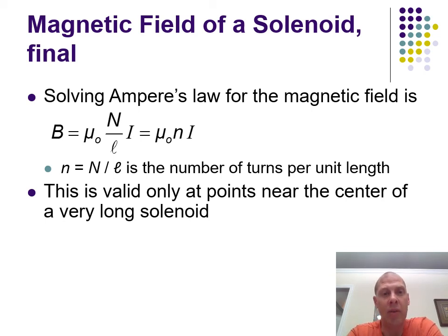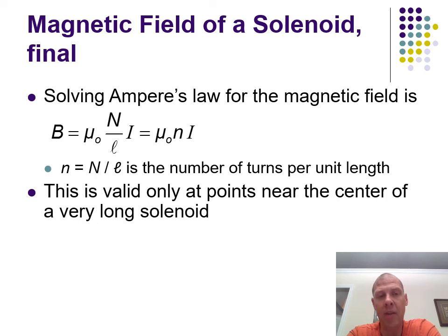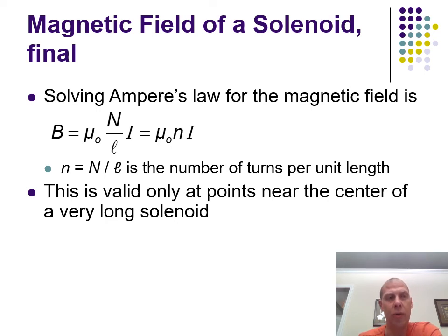When you apply Ampere's law to a solenoid and account for the number of turns and the length, you get B = μ₀In, where n = N/L is the number of turns per unit length. So if you have a thousand turns per meter, n equals 1000. Lowercase n is turns per unit length; uppercase N is the total number of turns.